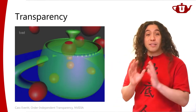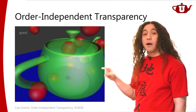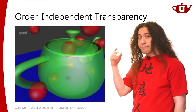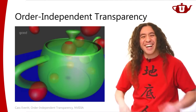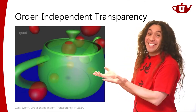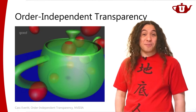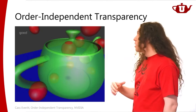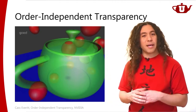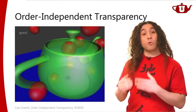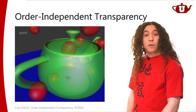What we want is Order-Independent Transparency (OIT) — getting a correct transparent image regardless of the triangle render order. The obvious solution is to use an A-buffer instead of Z-buffer, but GPUs use Z-buffer, so we need to work around that. One approach is depth peeling.